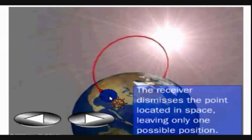This is how we use the trilateration principle and three or four satellites to exactly locate the position of the GPS receiver.